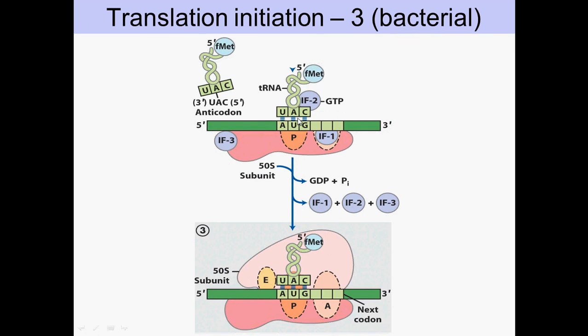Once formyl-methionine is bound, all the initiation factors leave. The A-site becomes free, IF3 leaves so that the large subunit can bind, and elongation can occur.